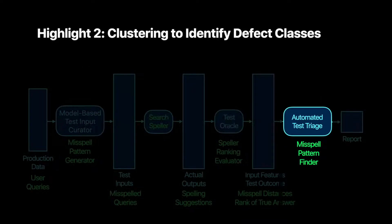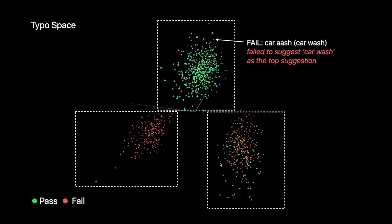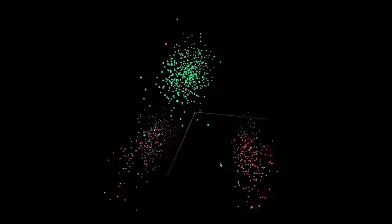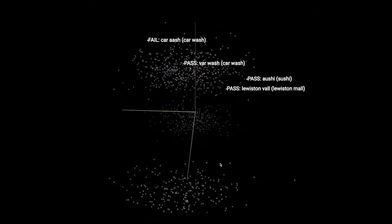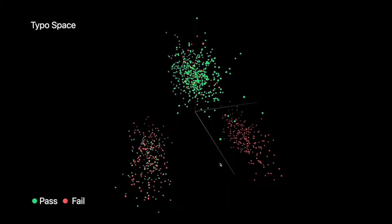The second highlight is clustering to identify defect classes when triaging failures. In this typo space, we represent each point as a test case — colored green if it passes or red if it fails. Two points are close in this typo space if they share similar typo patterns. We have three clusters illustrated here. In the top cluster, we have car-ash where 'w' is misspelled as 'a,' along with sushi and car-wash with similar substitutions. Most test cases in the top cluster are green, meaning the car-ash failure may not be a systematic defect.